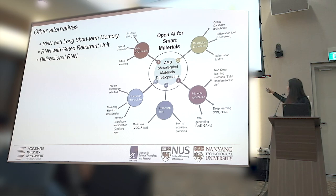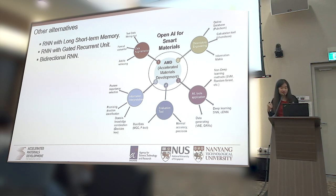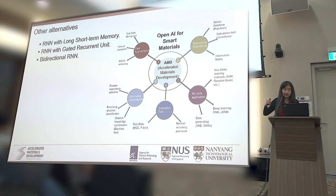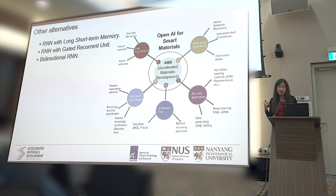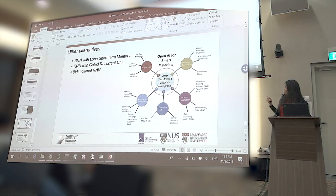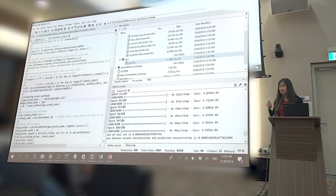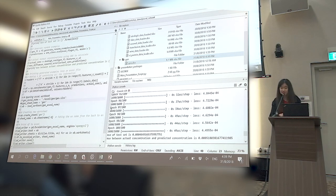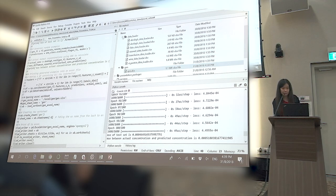That is the overall framework. Based on the basic RNN model, we can add more different additional functions to make it more functional. Here is the framework for how to use machine learning to accelerate materials development: first, prepare your data — if you don't have good data, it is nothing. Then do feature engineering to get the material descriptors, select your machine learning tools, and finally interpret your results. Human intelligence is still very important.